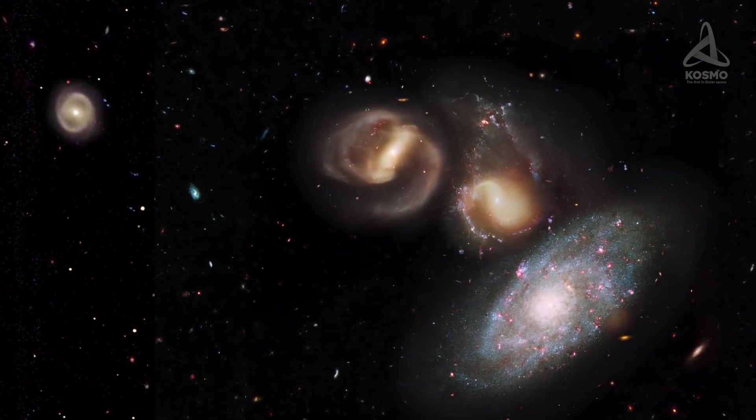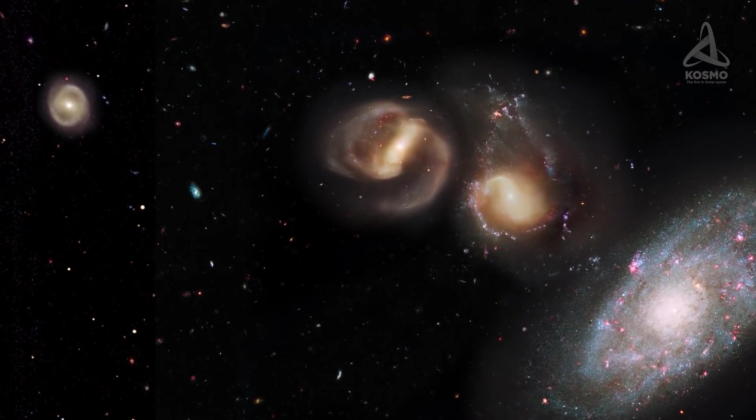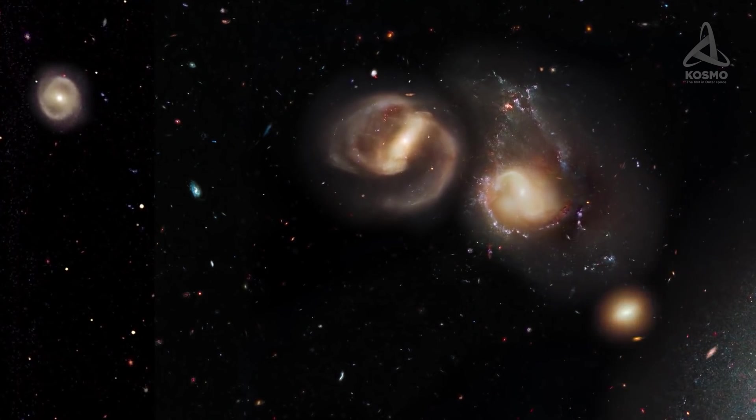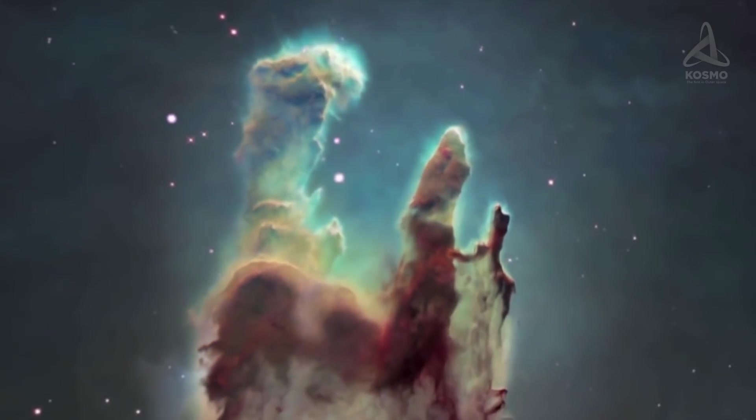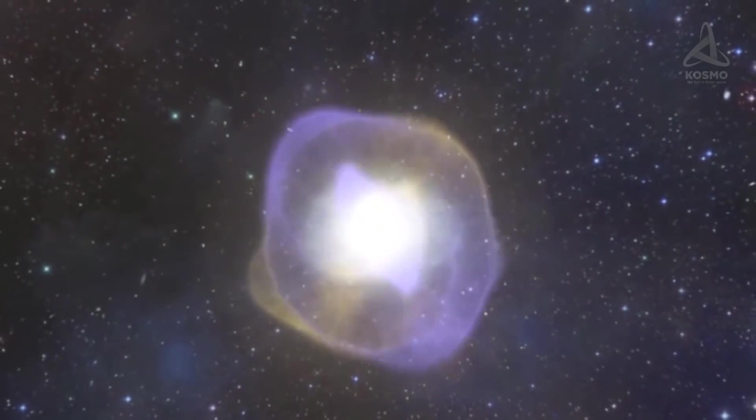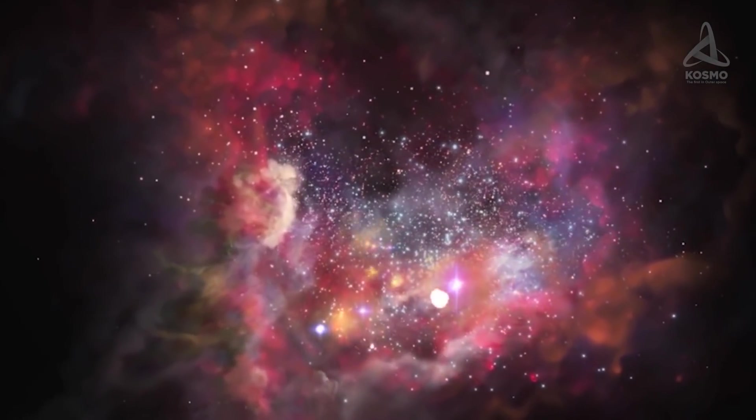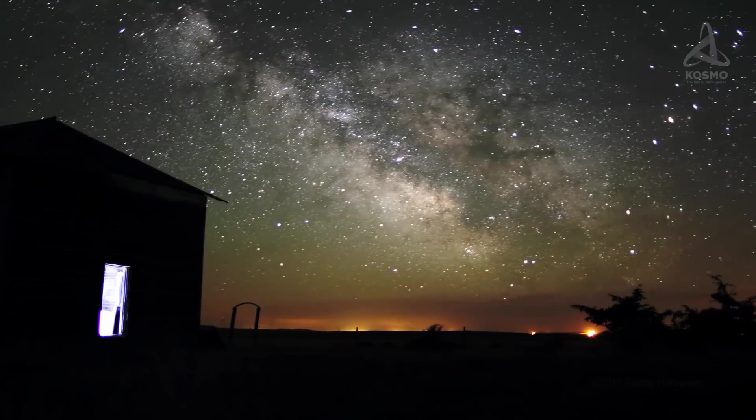As a rule, they are chaotic formations with neither clear nucleus nor spiral arms. Lenticular or SO galaxies, elliptical galaxies and barred spiral galaxies like our own Milky Way fall into this category too.